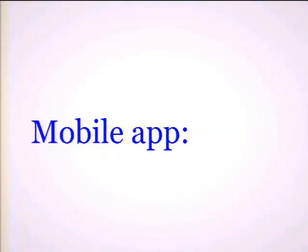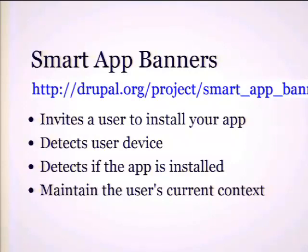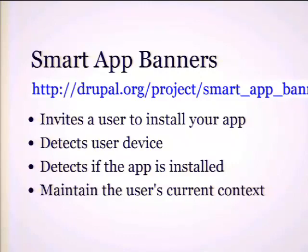For the mobile app, there are several modules you could use. One is Smart App Banners, used for your mobile website — if you're viewing it from a mobile device on Android or iOS, this module shows a nice welcome banner to install your iPad or Android application. It detects the user device based on the group and detects if their app is already installed. A future version should maintain context and pass some parameters to the mobile application.